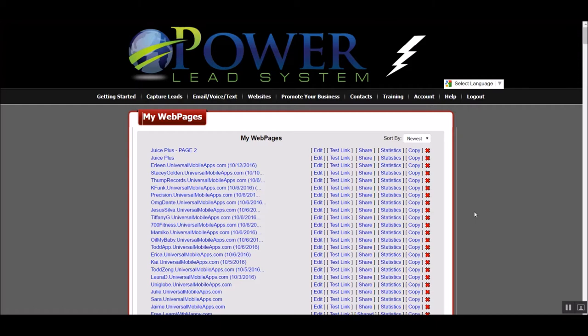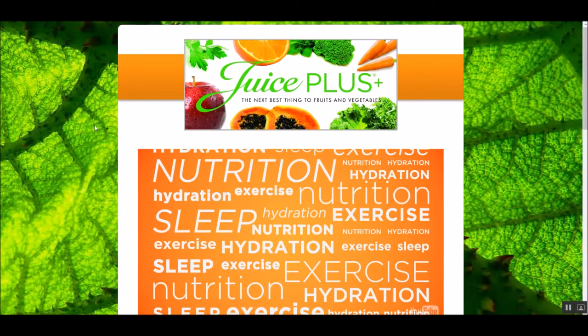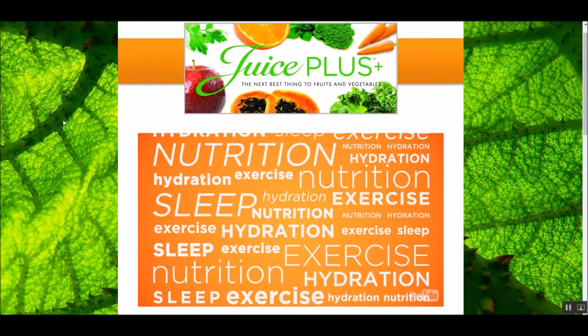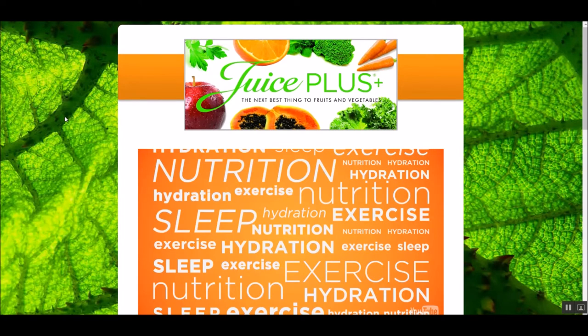Let me show you an example of what we're going to be sharing about. For example, you're in a business like Juice Plus — this is a health and wellness company. A client of mine is promoting this and just started using the Power Elite system, so I was helping them put together a sales funnel. When you're promoting your business online, you have to have a way to get your message out there that is duplicatable — that is the key. You can't be in the same room on every single deal, so you have to get your message out in a way that you can be making money while you're sleeping.